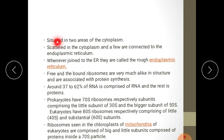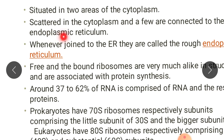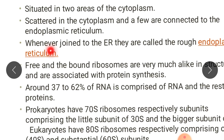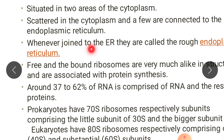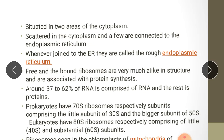Ribosomes are situated in two areas of the cytoplasm: scattered in the cytoplasm, and some connected to the endoplasmic reticulum. Whenever joined to the ER, they are called rough endoplasmic reticulum.